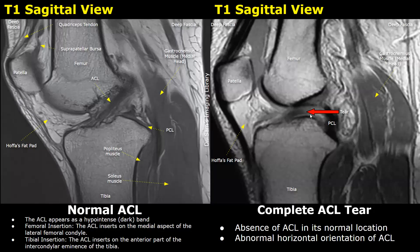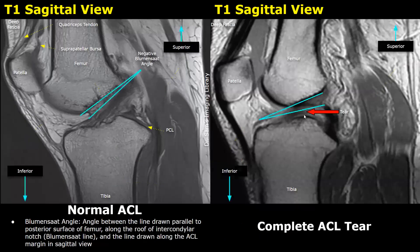The image on the right shows a complete ACL tear. In this case, we do not see the normal fibrous slanting band in sagittal plane — it is absent. There is absence of the ACL in its normal location. It is present down here in a horizontal orientation, and this appearance suggests a complete ACL tear.